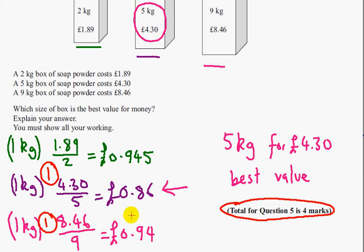The third one is for these values here. And the fourth one is for comparing them and actually coming up with an answer. So in this case, 5kg for £4.30 is the best value. But you can't get the fourth mark, obviously, without all this here. And that's it for question 5.